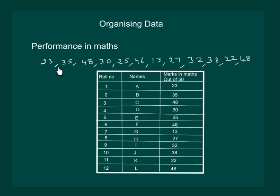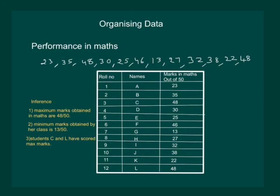But if the teacher organizes the data by constructing a table of the roll numbers, the names, and the marks obtained in maths, she can make various inferences. Firstly, the maximum marks obtained by her class are 48 out of 50. Minimum marks obtained in her class are 13 out of 50. Students C and student L have scored the maximum marks. And student G has scored the minimum marks. Hence, we have seen that when we put data in a proper table, it becomes easy to understand and interpret the data.